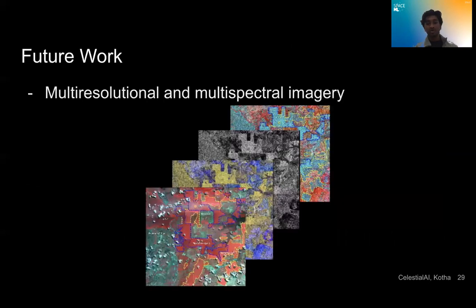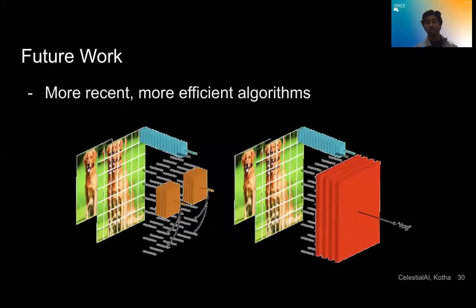What is future work? Well, we want to work on multi-resolutional, multi-spectral imagery, basically work for more complex sorts of images rather than just our standard RGB. And we also want to work on the more recent and more efficient algorithms and expand on those. And eventually, we hope to integrate this into our sort of pipeline where we can do a lot of natural disaster detection and meteorological phenomena analysis without many examples and just with a few images.